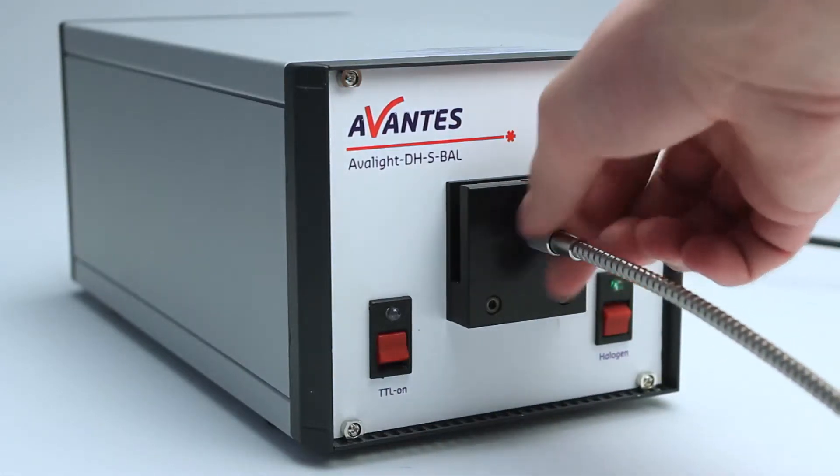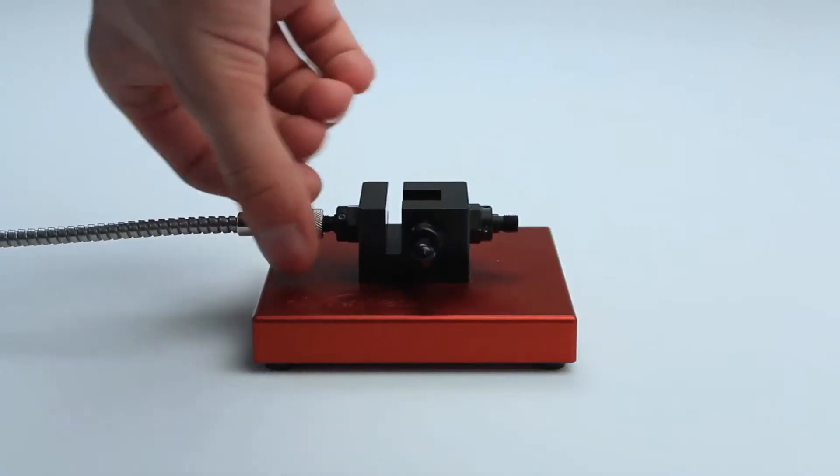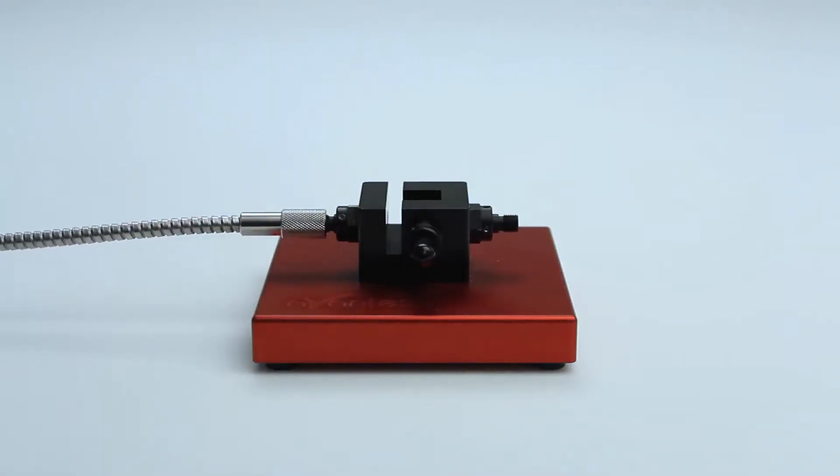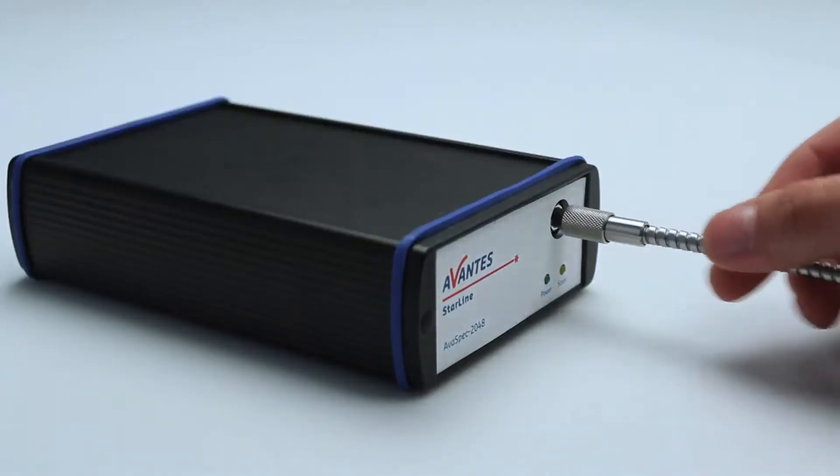Start by connecting the light source to the cuvette holder. Afterward, connect the spectrometer to the cuvette holder.